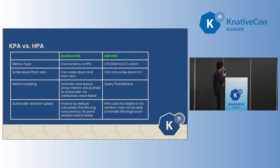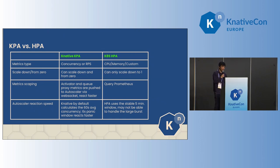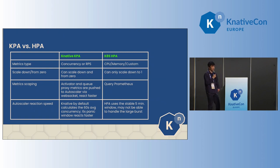Knative by default calculates average concurrency in a 60-second window. It also enables a panic window of six seconds, which can react faster when you are receiving bursts of traffic. The HPA uses a stable five-minute window, so sometimes it may not be able to handle large bursts of requests.